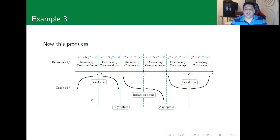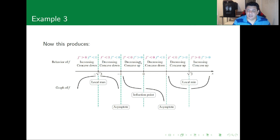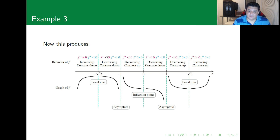Summarizing over all intervals — from -∞ to -√3, from -√3 to -1, from -1 to 0, from 0 to 1, from 1 to √3, and from √3 to ∞ — we can describe behavior in each. For example, from -∞ to -√3 the function is increasing with f' positive and f'' negative, so it is increasing and concave down. From -√3 to -1, f' is negative and f'' is negative, so it is decreasing and concave down.